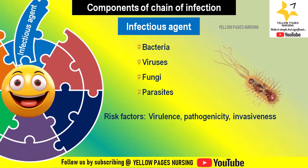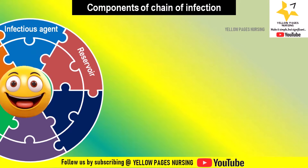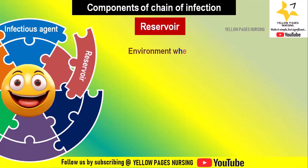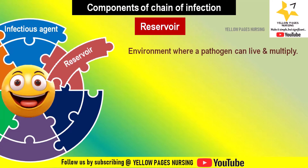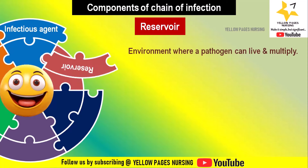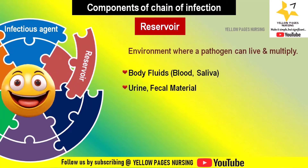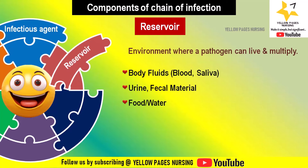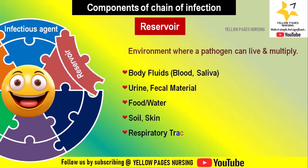Next comes reservoir or source. This means the environment or habitat where a pathogen can live and multiply. It can be environmental surfaces or equipment, body fluids like blood and saliva, urine or fecal material, food or water, soil, skin, respiratory tract, and more.